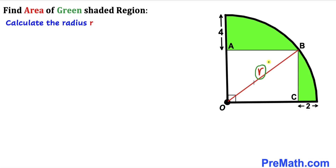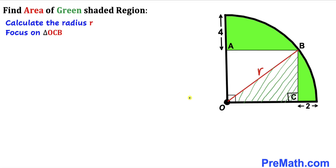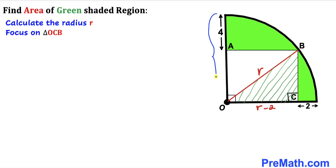Let's focus on triangle OCB and make an observation. We can see that the whole diagonal is our radius r, and we know this horizontal distance is 2 units. So therefore the distance OA is going to be R minus 2. Likewise, looking at the vertical radius, that is R as well, and the vertical distance is 4 units, so the distance OA on that side is going to be R minus 4.